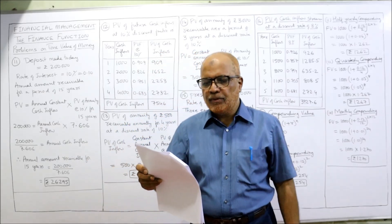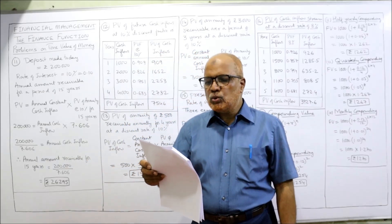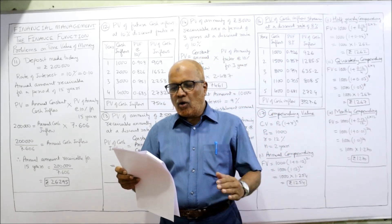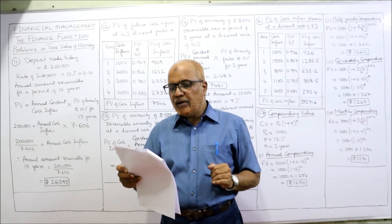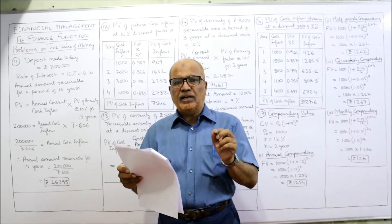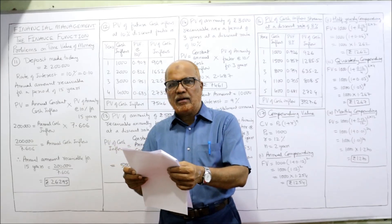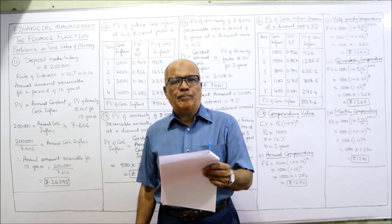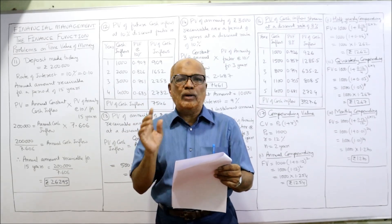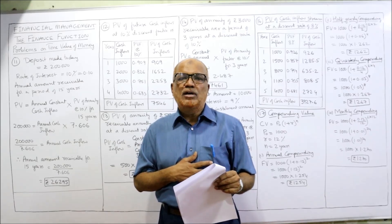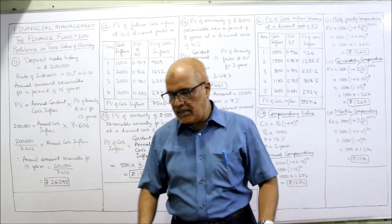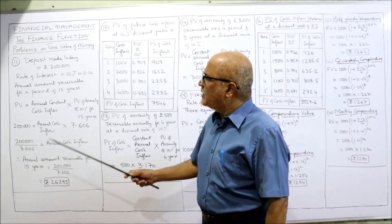Now see the 11th problem. Mahesh deposits 2 lakh rupees in a bank account which pays 10% interest. How much can he withdraw annually for a period of 15 years? That means, what is the annuity value of the deposit? Presently he is depositing 2 lakh and the bank is paying interest at 10% per annum for 15 years. We need to find the annual constant amount Mahesh will get from the bank.